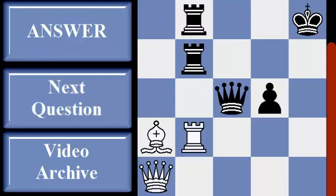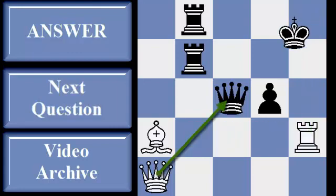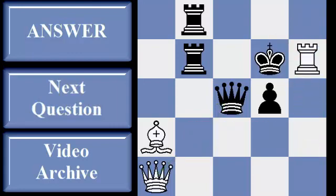Remove the defender. If you need more time, pause the video. With tempo, white reveals the discovered attack on black's queen, then sacks the rook to remove the king from protecting his queen.